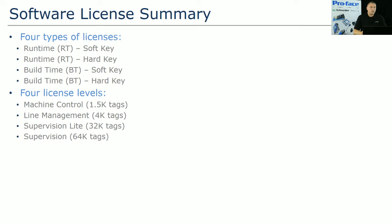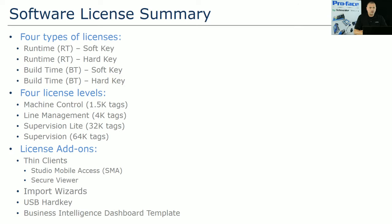We have four different license levels: machine control, line management, supervision light, and supervision — though most refer to them by tag count: 1500, 4000, 32, or 64 thousand tags. We also have add-ons available, including two thin clients — Studio Mobile Access (SMA) and Secure Viewer — which is a standalone installation that can connect back to the runtime.